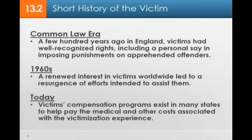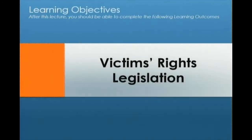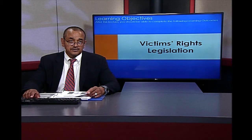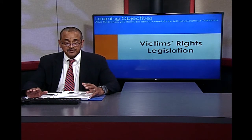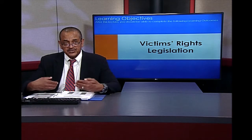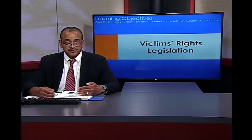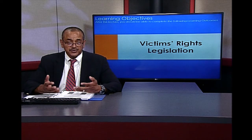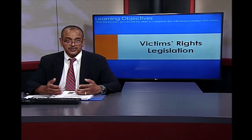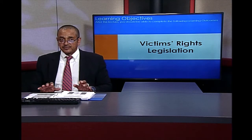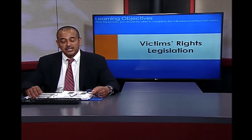In the 1960s, a renewed interest in victims worldwide led to a resurgence of efforts intended to assist them. Today, victims' compensation programs exist in many states to help pay the medical and other costs associated with the victimization experience. In the modern era, victims have rights — they can receive assistance from society, from the courts, from the safety nets that have been set up. This did not exist until fairly recently, beginning in the 1960s in the United States.